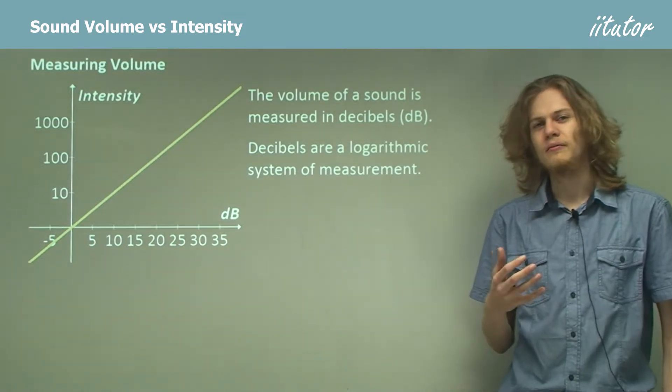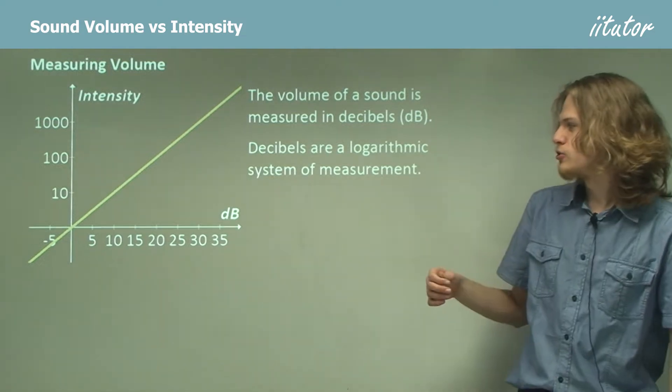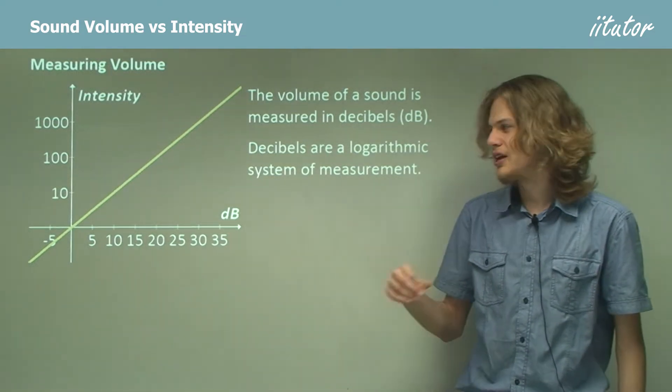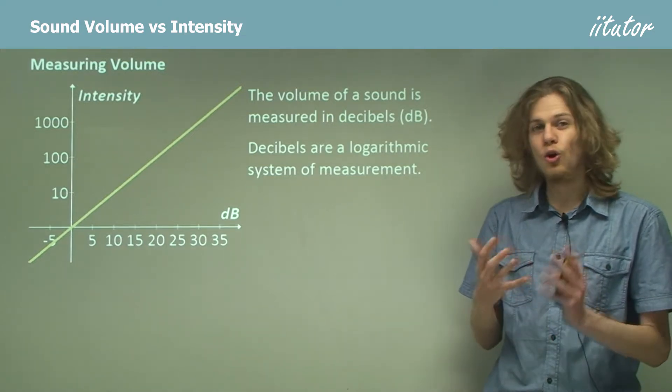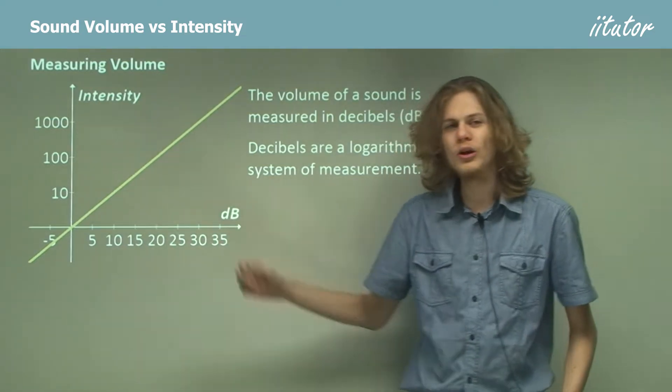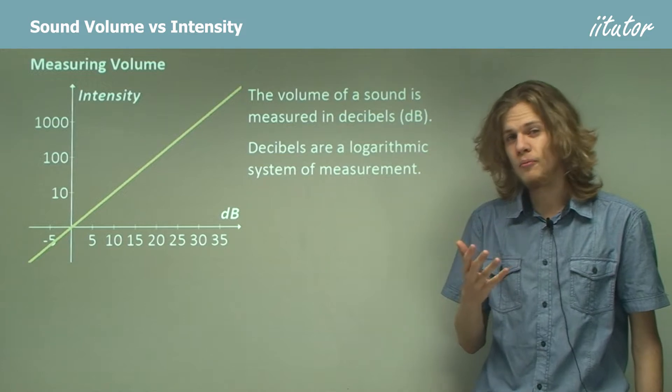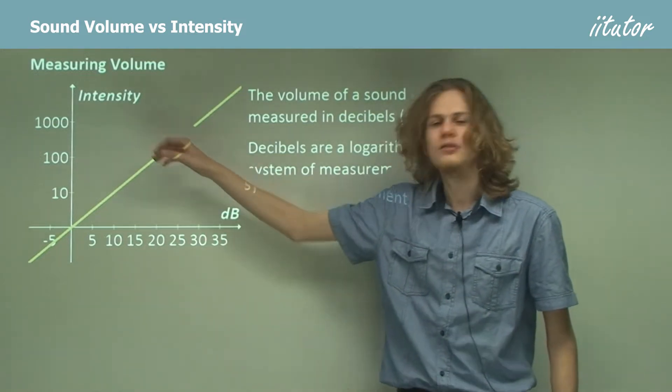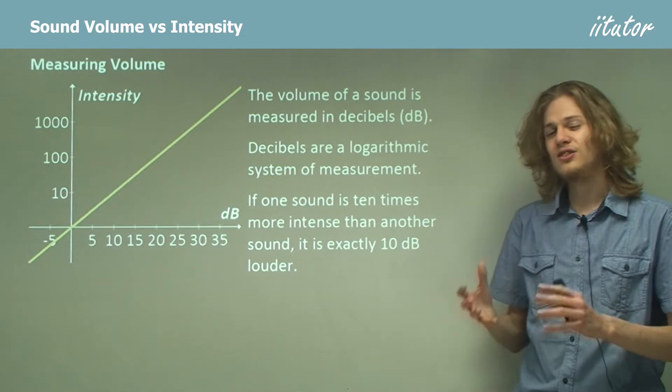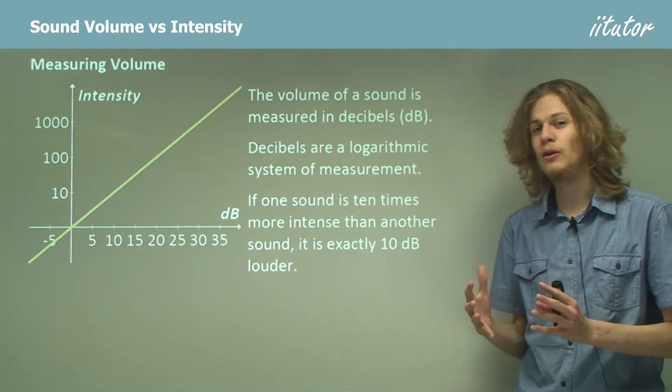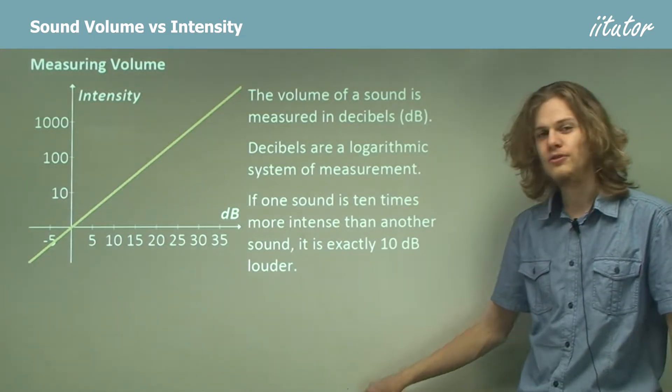Logarithms pertain to the different powers of numbers. If we were to take the logarithm base 10 of the number 10, we'd get 1. If we were to take the logarithm base 10 of 100, we'd get 2. If we take the logarithm base 10 of 1000, we get 3, and so on. So if one sound is 10 times louder, then it's 10 decibels louder. That's the conversion factor that we use.